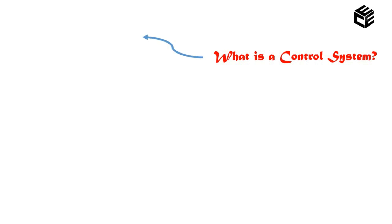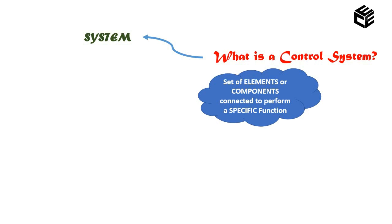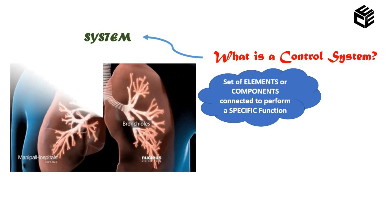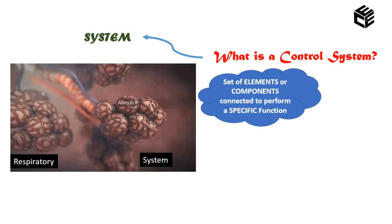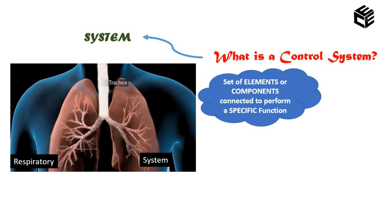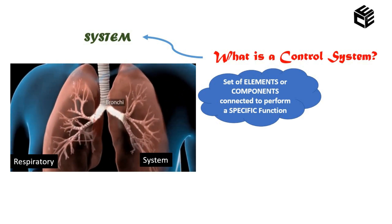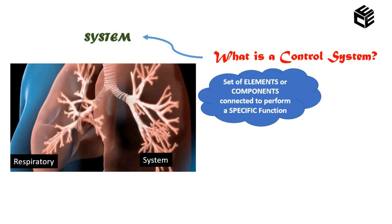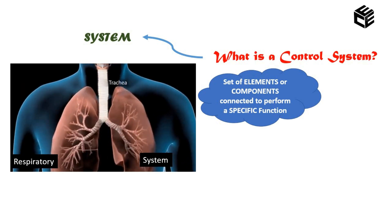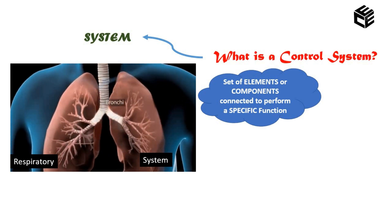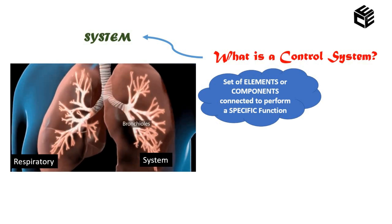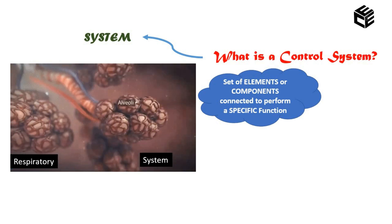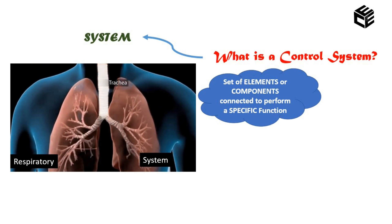Let's discuss what is a control system. Before knowing a control system, we must be familiar with a system. A system is a set of elements or components that are connected together to perform a specific function. For example, consider the respiratory system — a number of organs like lungs, nose, alveoli, bronchioles, trachea, and bronchi are combined together to perform the single function called respiration. So a system is a set of elements connected to perform a specific function.